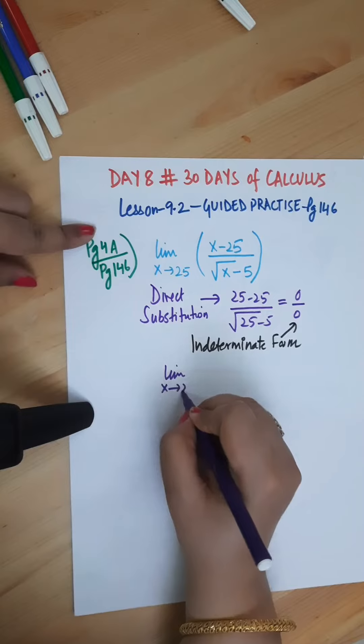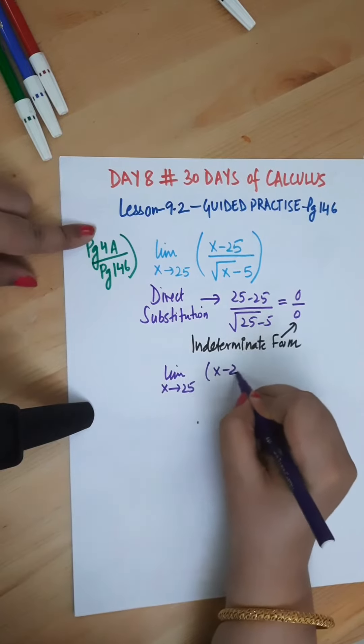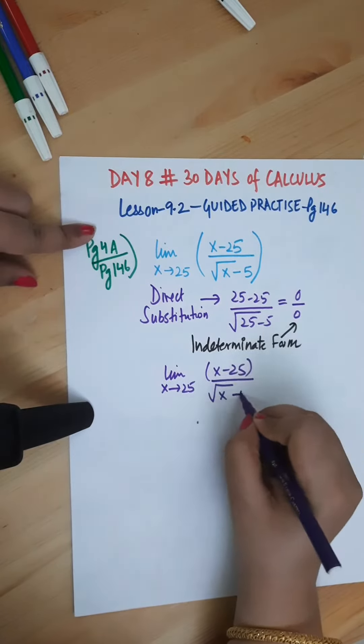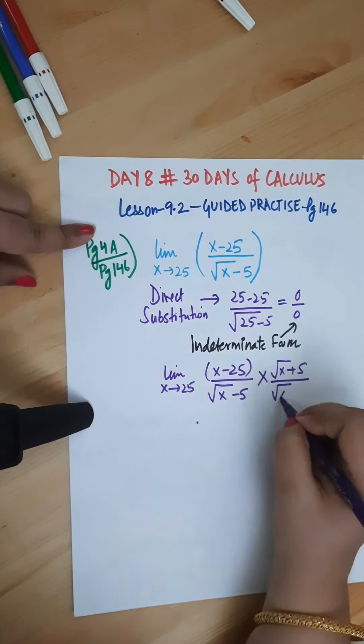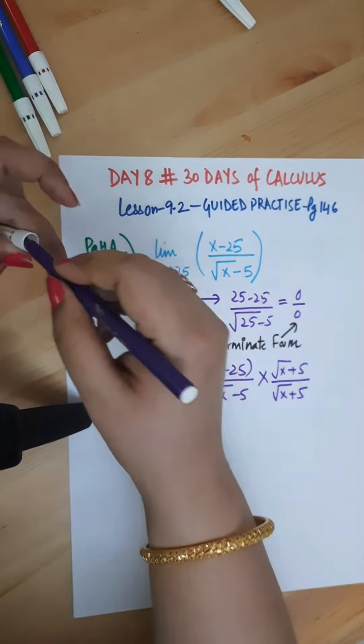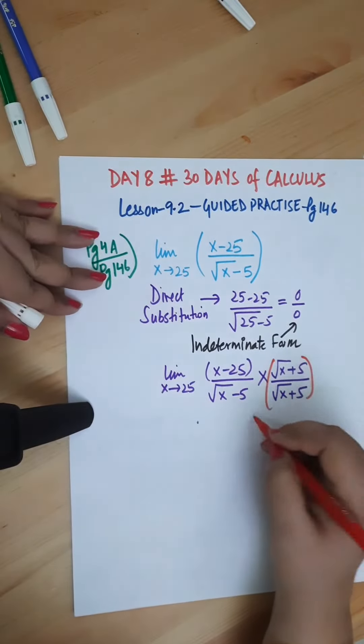Limit as x approaches 25 of x minus 25 over square root x minus 5. So here we are going to do rationalization. When we do rationalization, we multiply the numerator and denominator with the conjugate.